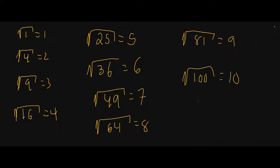And so on and so on. It's super important to have our square root family because we want these when we go to reduce radicals — we always want to reduce them with a perfect square in it.